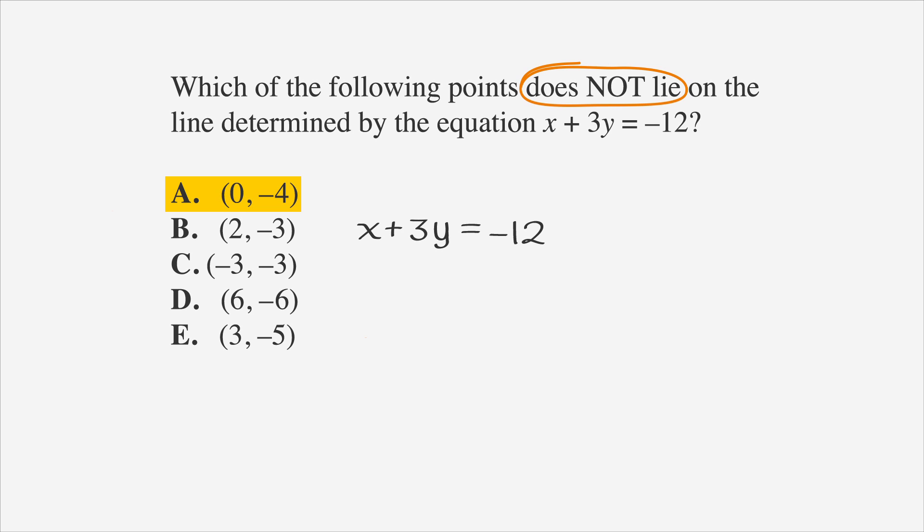Let's start with choice A, (0, negative 4). Plugging 0 in for x and negative 4 in for y, we get negative 12 equals negative 12. That's a point on the line, but we're looking for a point that is not on the line, so we can eliminate answer choice A.